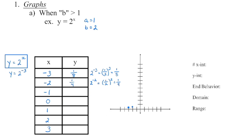When x is negative 1, again with a negative exponent, by reciprocating the base of the power the exponent switches signs, giving us a value of 1 half. When x is 0, we know anything to the power of 0 has a value of 1, so when x is 0, y is 1. When x is 1, 2 to the power of 1 is just 2, so when x is 1, y is 2.